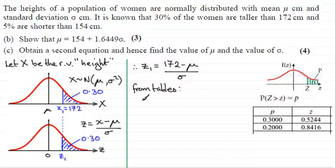It's just going to be 0.5244. So we've got that Z₁ equals 0.5244.